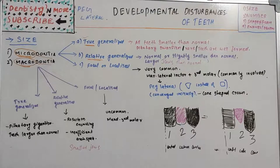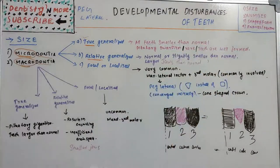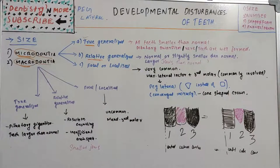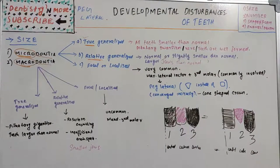Hello everyone, welcome back to a new session in Dentistry and More. Today's topic is developmental disturbances of teeth. These are arranged in four categories: disturbances related to size, number, shape or form, and the fourth involving formation of enamel and dentine. The enamel and dentine related disturbances — amelogenesis imperfecta, dentinogenesis imperfecta, dentine dysplasia, and regional odontodysplasia — have already been covered. Now we are looking at size-related developmental disturbances.